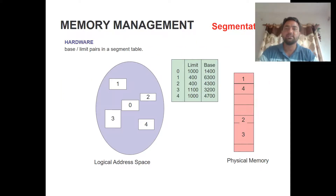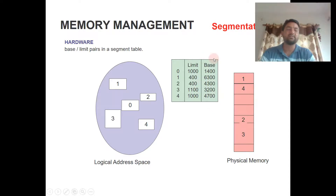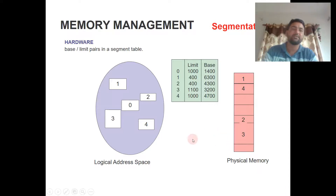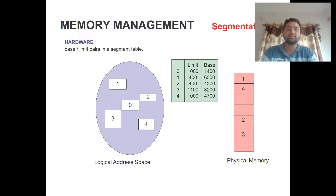As you can see in the diagram, the segment table has three entries: the segment number, the limit, and the base address in physical memory. The corresponding logical address has five segments — 0, 1, 2, 3, and 4 — all of different sizes. These segments are then mapped into physical memory by first checking the limit against the segment table.